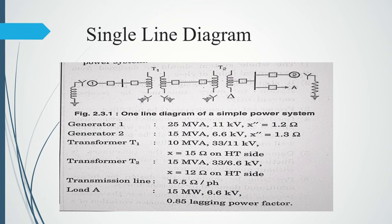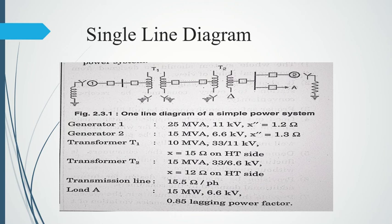The single line diagram shows us the main connections, the arrangement of components, and the flow of power. We can see generators, motors, transformers, loads, and transmission lines — everything with the help of this single line diagram. Generator and transformer connections — star, delta, neutral grounding — are all indicated with the symbols we have just seen.